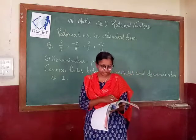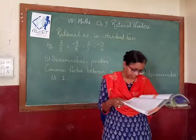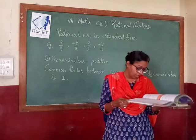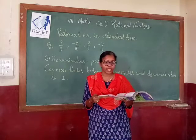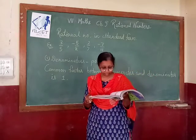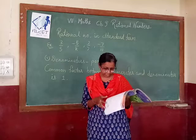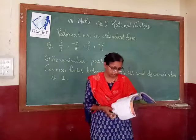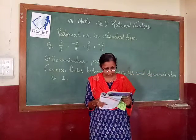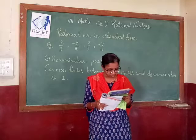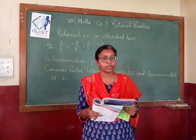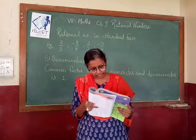If you see the definition in your textbook: the denominators of these rational numbers are positive integers, and 1 is the only common factor between the numerators and denominators. Also, the negative sign occurs only in the numerators. A rational number is said to be in standard form if its denominator is a positive integer and the numerator and denominator have no common factor other than 1.